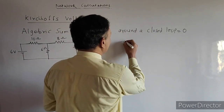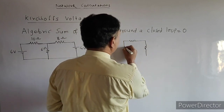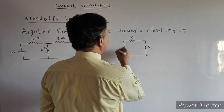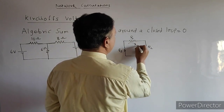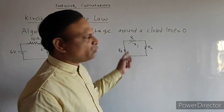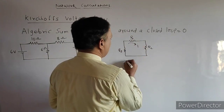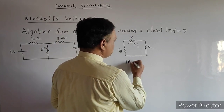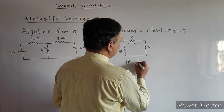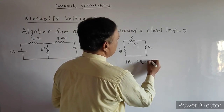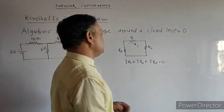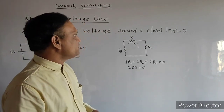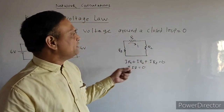That means, if this is a closed loop — a set of branches forming a closed path — say R1, R2, R3 are the resistances and I is the current passing through them, then IR1 plus IR2 plus IR3 is zero. So the summation of IR is zero, meaning the algebraic sum of all voltages in a closed path is zero.